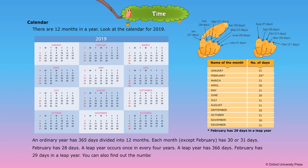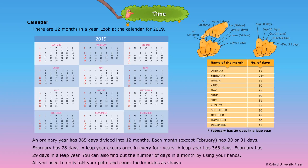You can also find out the number of days in a month by using your hands. All you need to do is fold your palm and count the knuckles as shown. January: 31 days. February: 28 or 29 days. March: 31 days. April: 30 days. May: 31 days. June: 30 days. July: 31 days. August: 31 days. September: 30 days. October: 31 days. November: 30 days. December: 31 days.